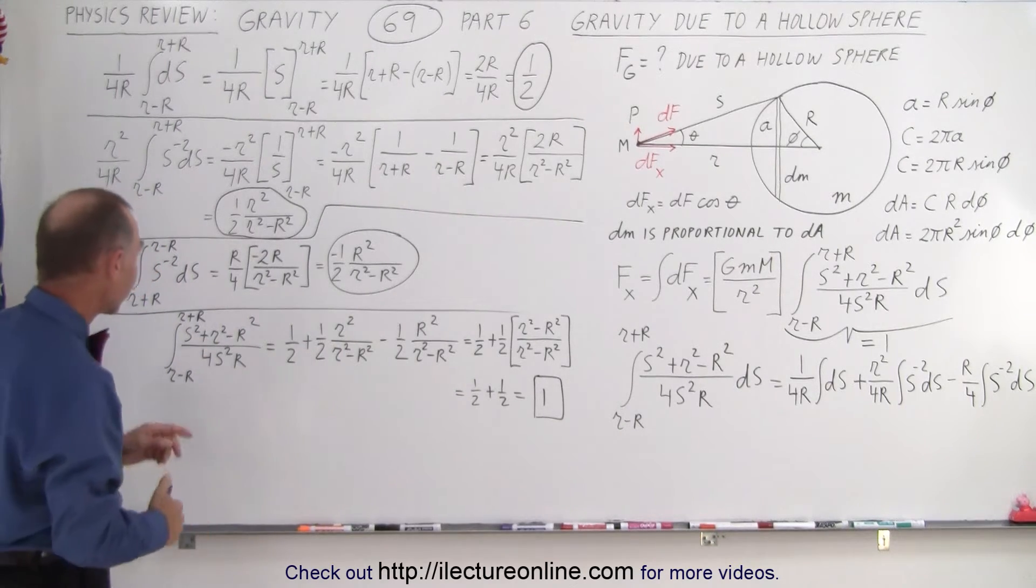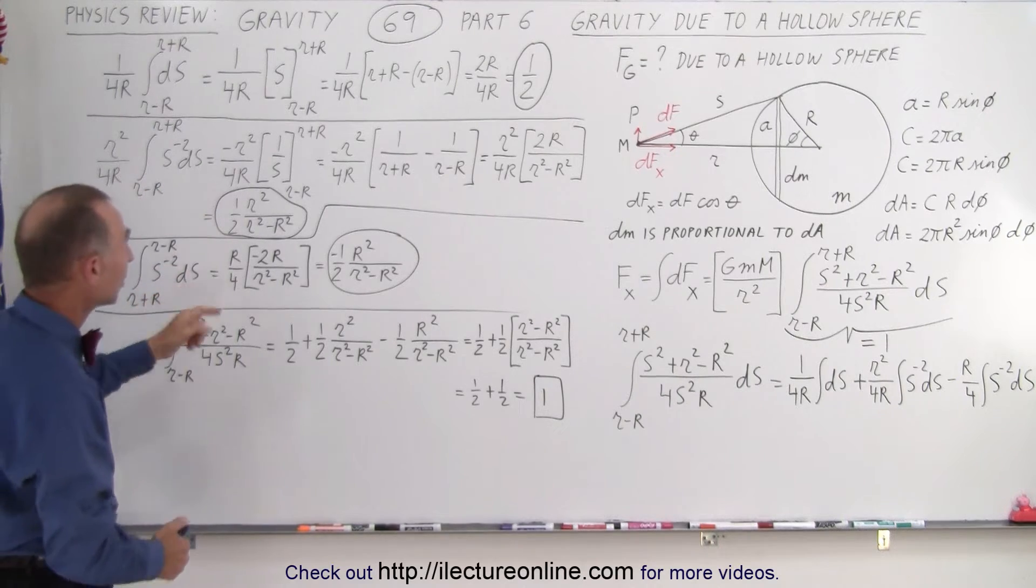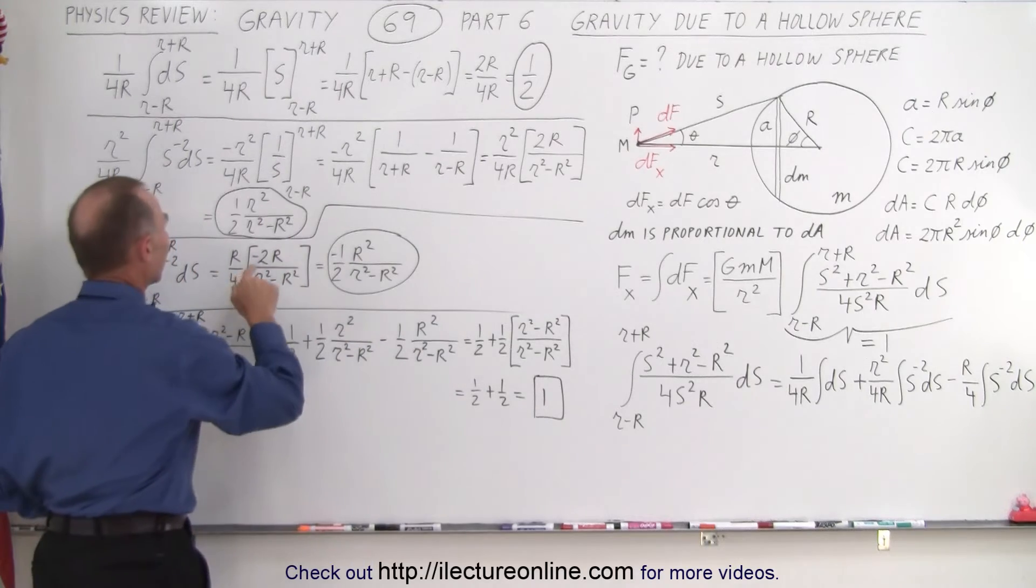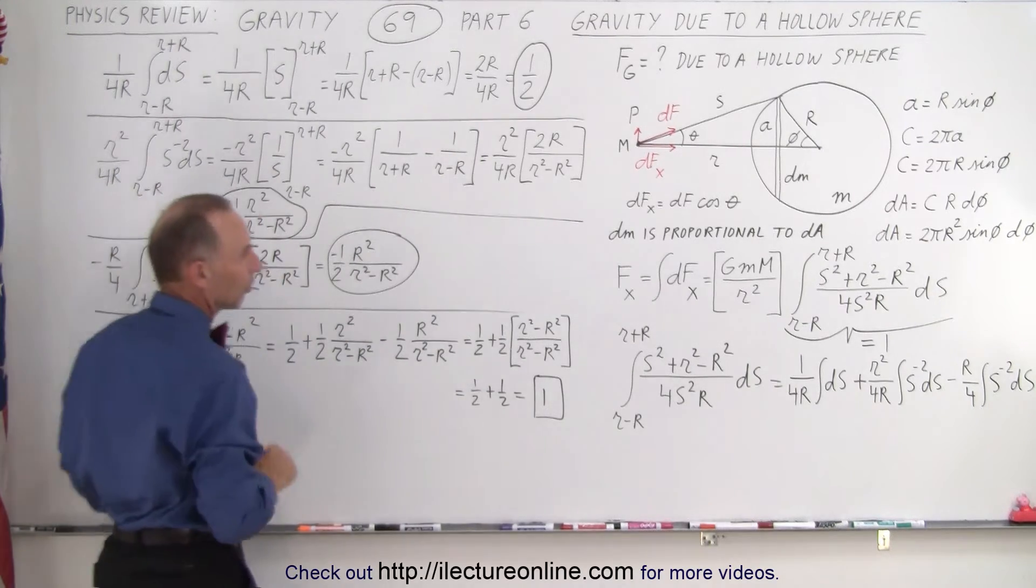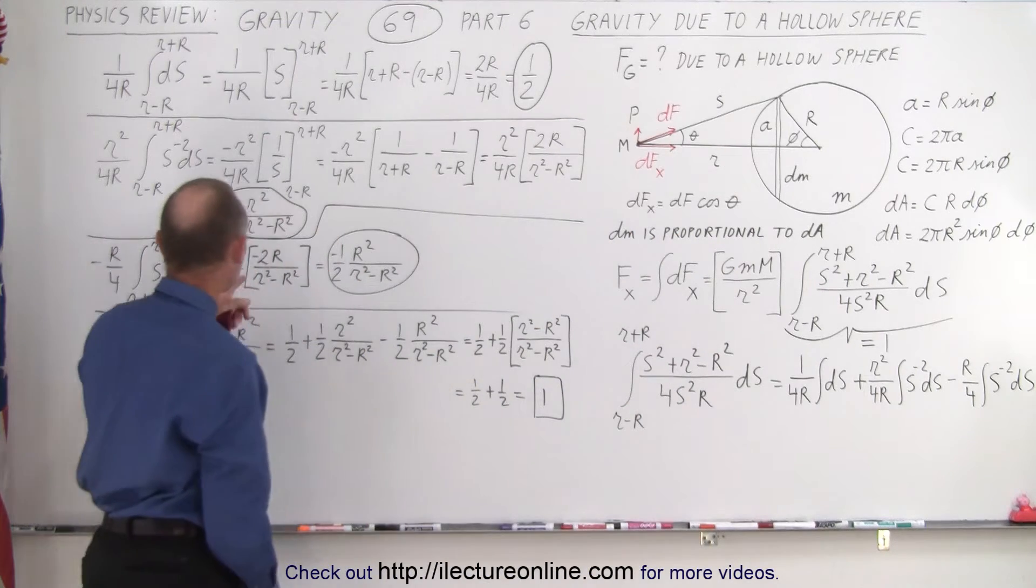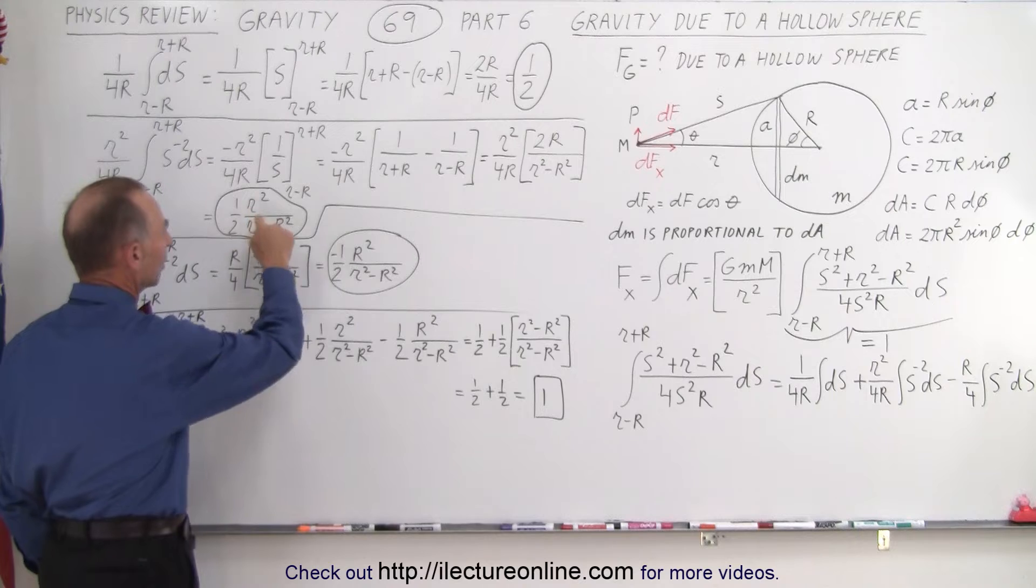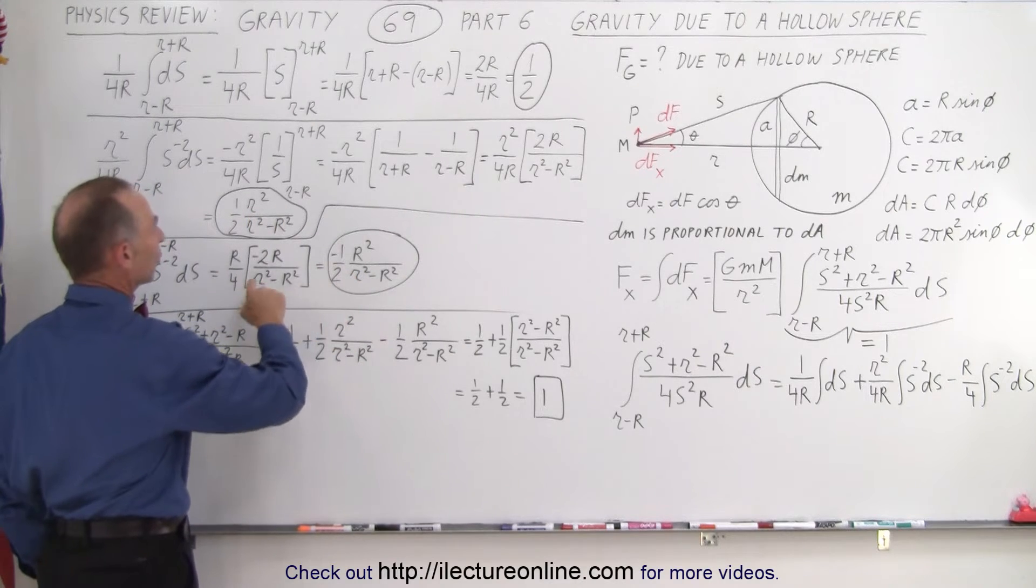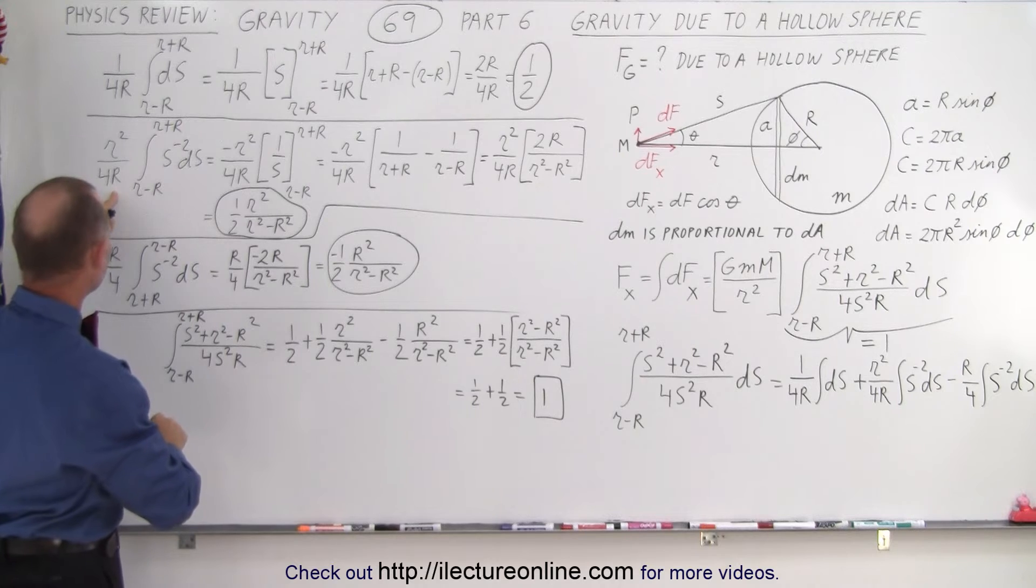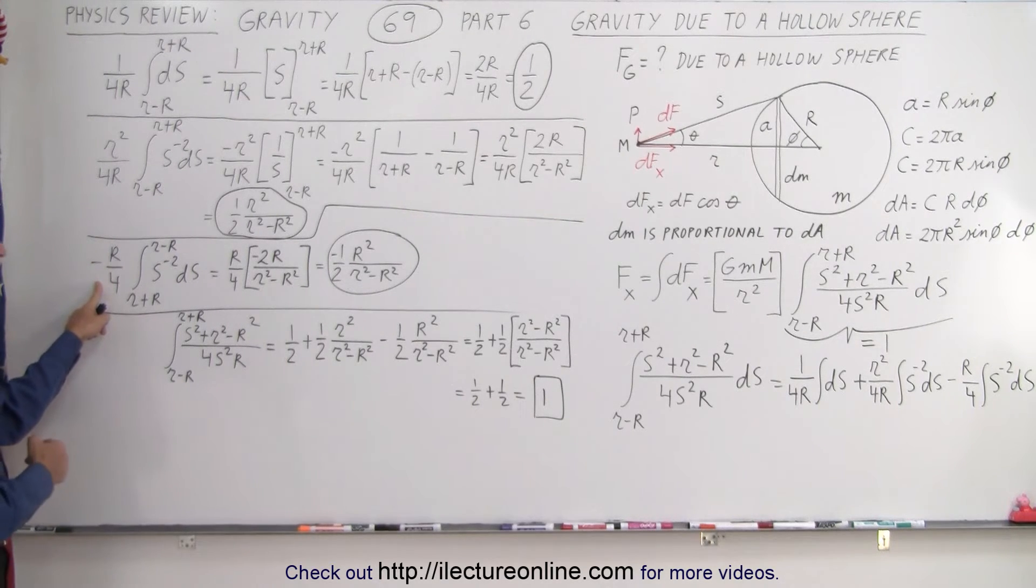We do the same with the third integral, it's actually the same integral, it's the integral of s to the minus 2 ds, so we end up with the same result right here. Now, we have a negative here because we have a negative on the third integral right there, so we can't forget about the negative, but again, we end up with the same result here. The only difference between these two is of course that the constants were different, so we have little r squared over 4 r for this one, and we have minus r over 4 for the third integral.